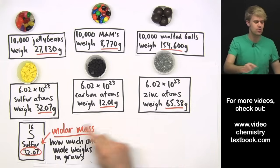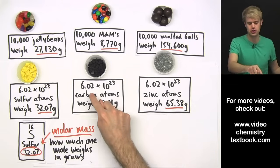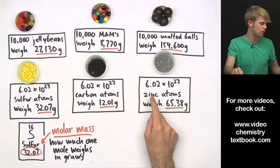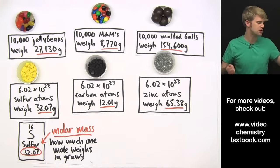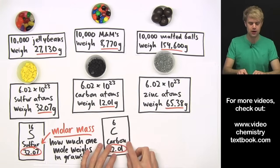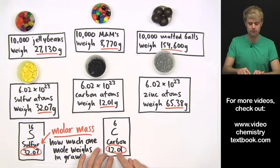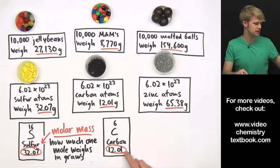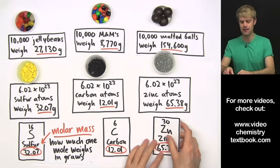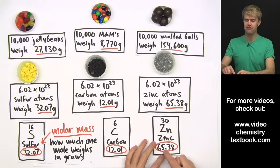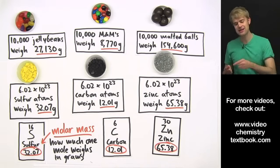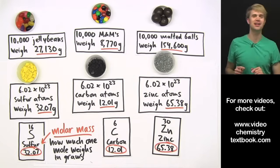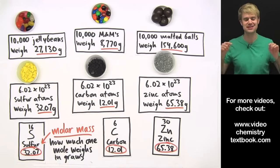And just as I did with sulfur, I know how much the carbon and zinc moles weigh because I can look up the atoms on the periodic table. So here we got carbon, 12.01 is its molar mass. That's how much one mole weighs. And zinc, look that up on the periodic table, 65.38, and that tells me how much one mole of zinc, 602 hexillion zinc atoms, weigh.